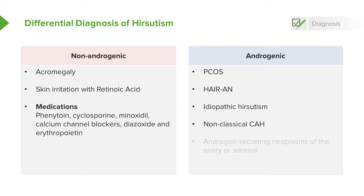Then there's non-classical CAH. For more information about congenital adrenal hyperplasia, please see the slides entitled CAH, or congenital adrenal hyperplasia. And then, very rarely, we can see androgen-secreting neoplasms in the ovary or the adrenal.